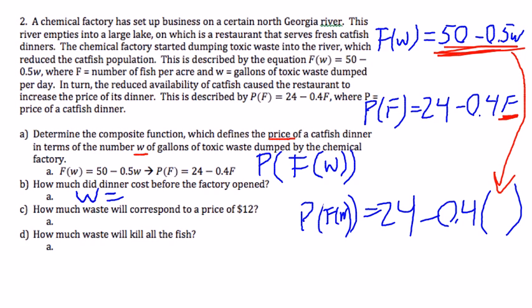How much waste will correspond to a price of $12? So now we know the price and we're trying to solve for W. In other words, we have 12 equals our composite function here, which you figured out. And we're going to have to now solve that for W.